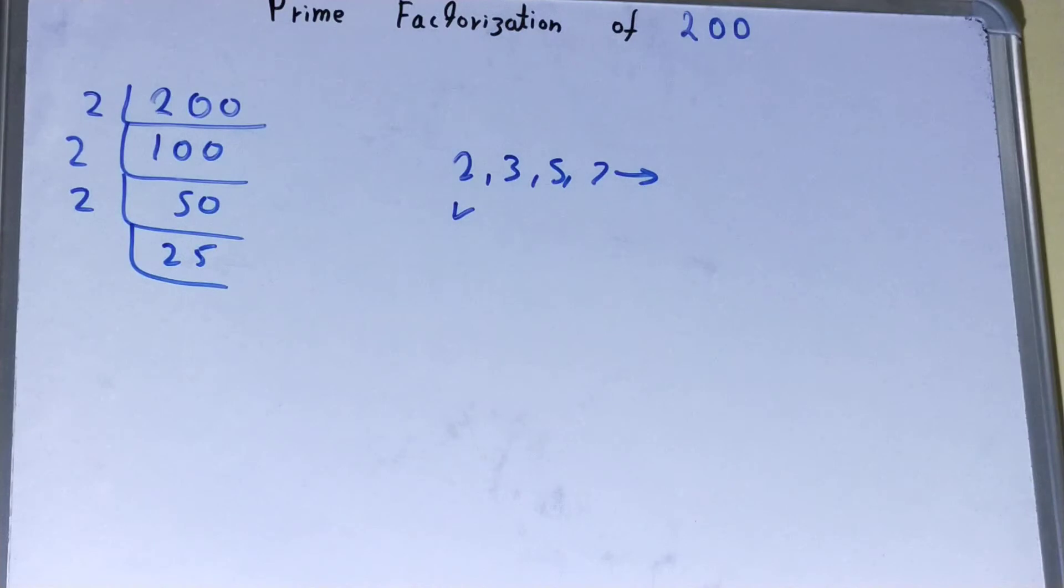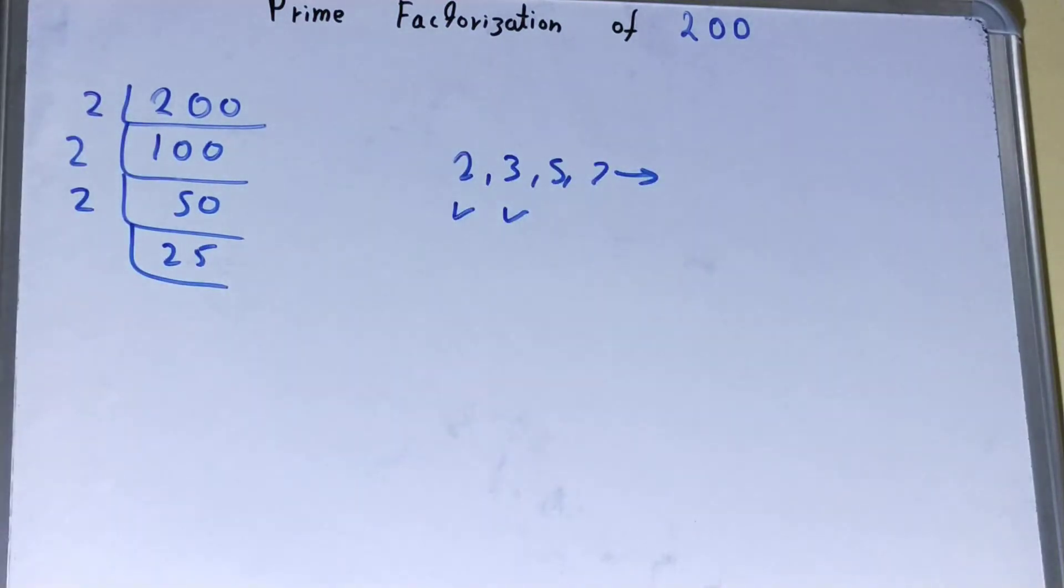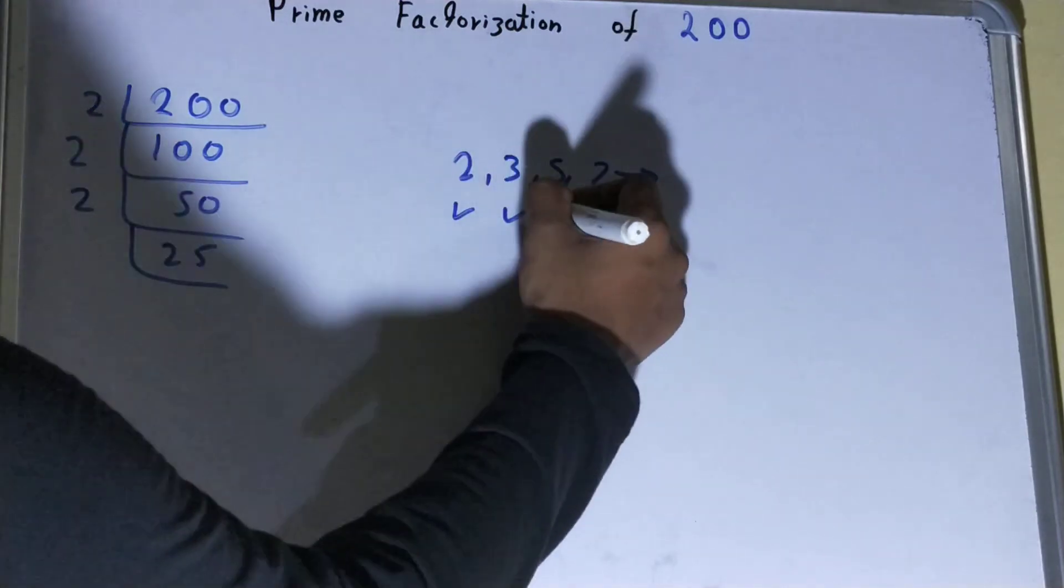Now is this 25 divisible by 2? No, because 25 is an odd number. So what we'll do is move on to the next lowest prime number, that is 3. Is this 25 divisible by 3? No. If you try to divide you'll get a remainder of 1, so we'll move on to the next lowest prime number, that is 5.